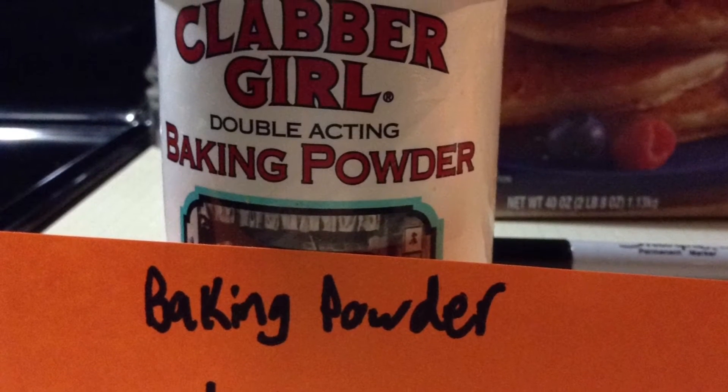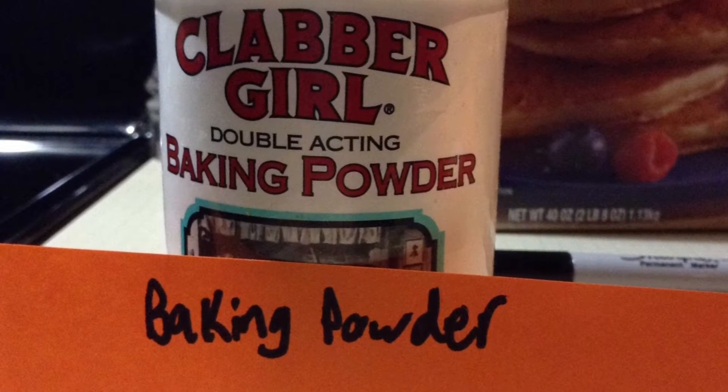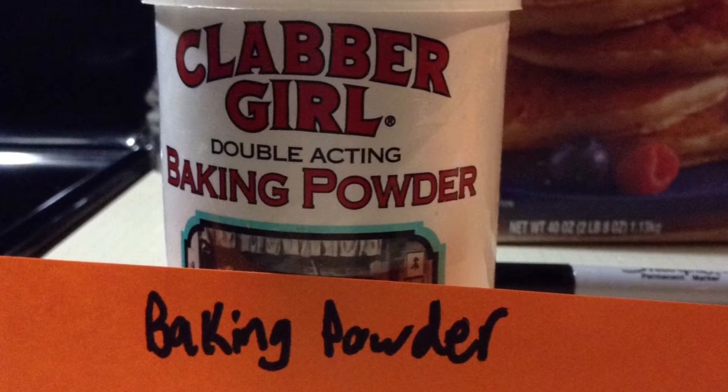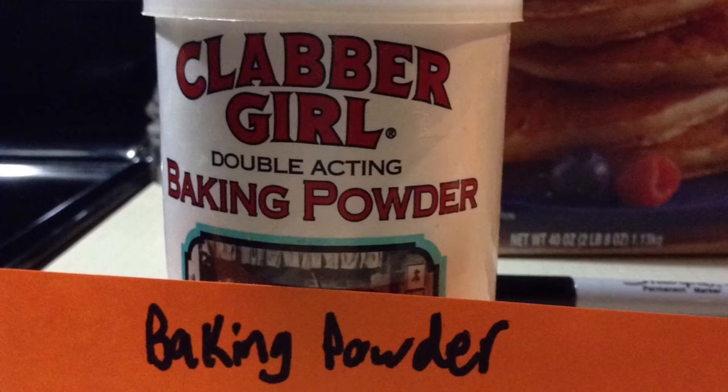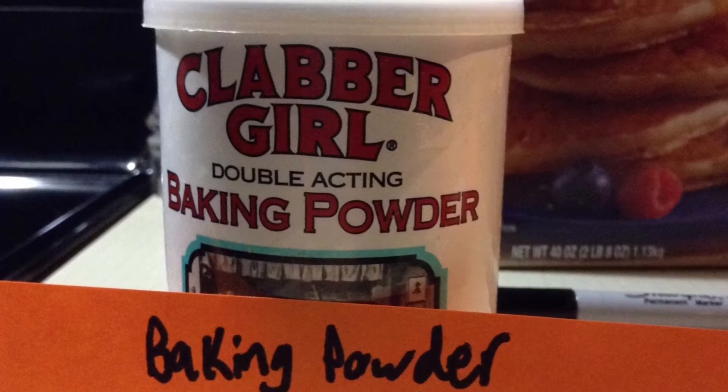Baking powder is important in pancakes because it gives it its volume. Another dry ingredient used in pancakes is flour, which chemical formula is C4H8O4. Flour is also important in pancakes because it makes gluten.